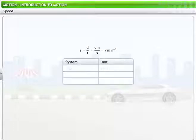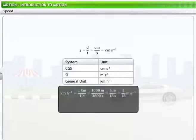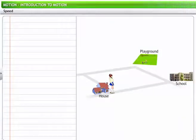Speed is measured in centimeters per second in the CGS system and as meters per second in the SI system. Typically, you measure speed in kilometers per hour. 1 kilometer per hour equals 5 divided by 18 meters per second, or 1 meter per second equals 3.6 kilometers per hour.